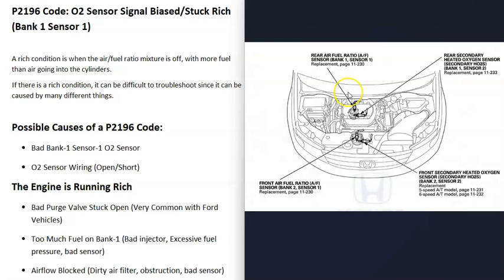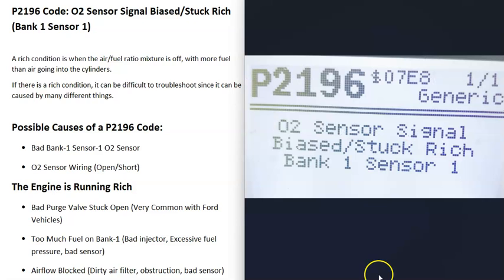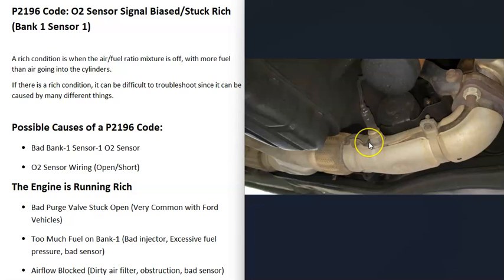It can be a good idea to get a diagram showing where all the sensors are located on your particular vehicle. For example, on a 2012 Honda Odyssey, bank one sensor one is right up against the firewall. That bank one sensor one oxygen sensor is the one to go locate since it's the one reporting the problem.